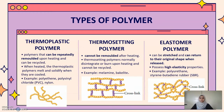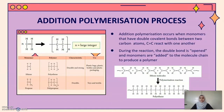And lastly, elastomer polymer. This polymer can be stretched and can return to their original shape when released. For example, polyurethane.